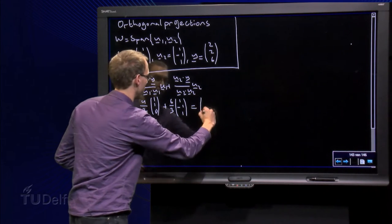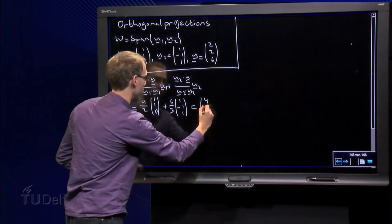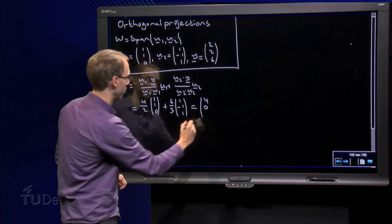2 plus 2 equals 4, 2 minus 2 equals 0, and 0 plus 2 equals 2.